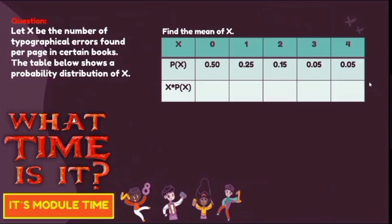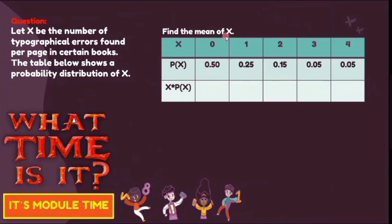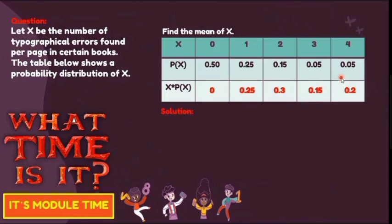For Step 3, multiply the value of x by the probability of x. So: 0 times 0.5 equals 0; 1 times 0.25 equals 0.25; 2 times 0.15 equals 0.3; 3 times 0.05 equals 0.15; and 4 times 0.05 equals 0.2. For Step 4, use the formula: the summation of x times the probability of x.